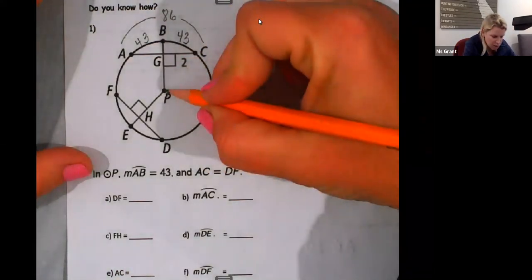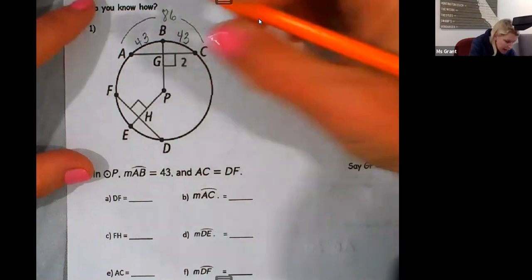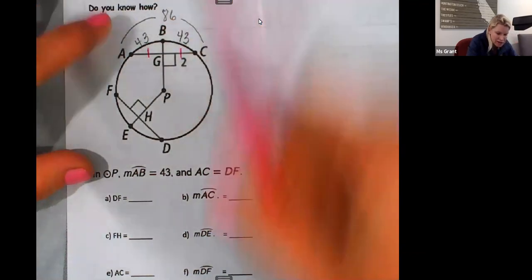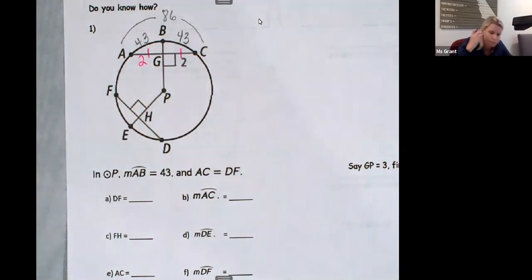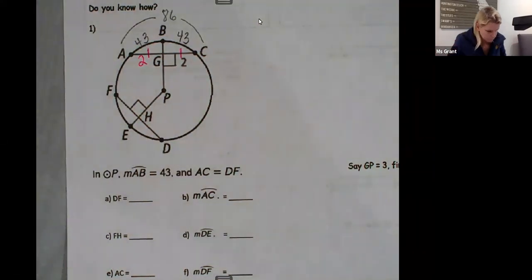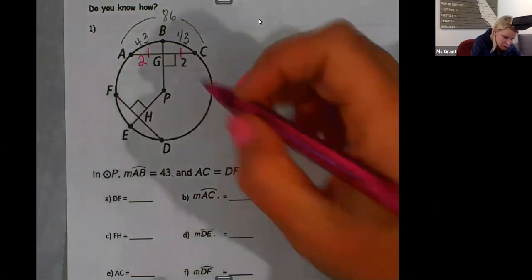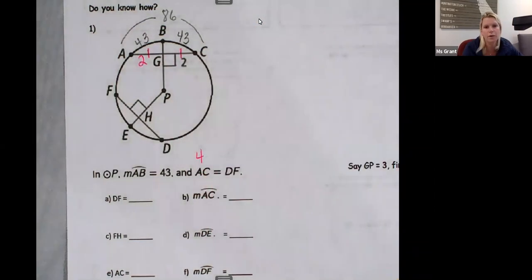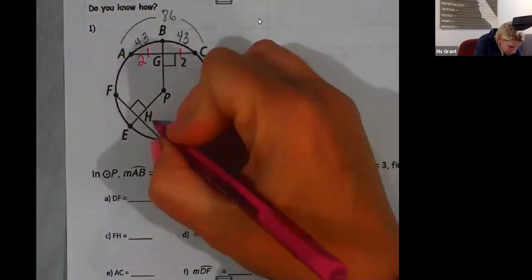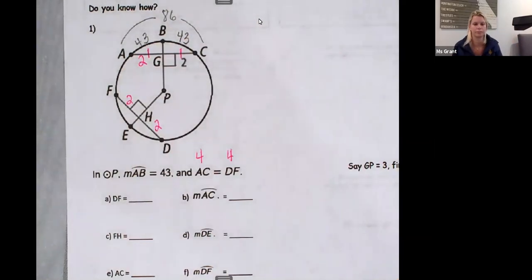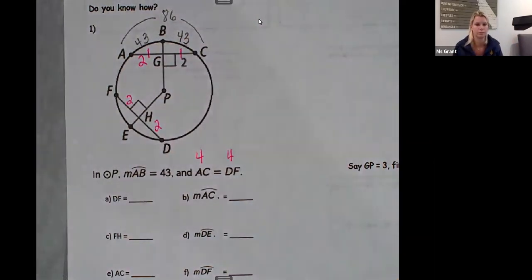So AG, I'll do colors. AG has to be the same. Hey, GC is two. AG must be two. AC is the same as DF. Well, seems that AC is two plus two, which is four, right? DF must be the same. It tells us it is four. Here's two and two.